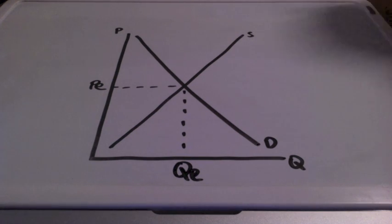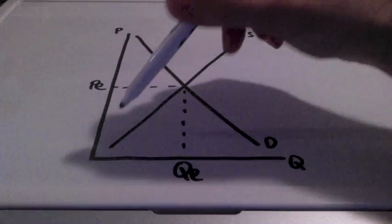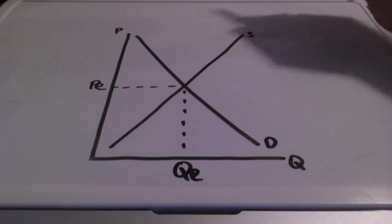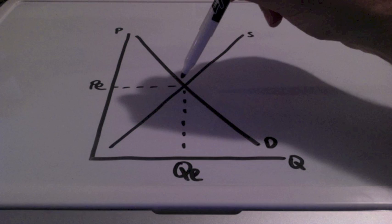When you put the downward sloping demand curve together with the upward sloping supply curve, you have a center point in the middle, and we call this market equilibrium.